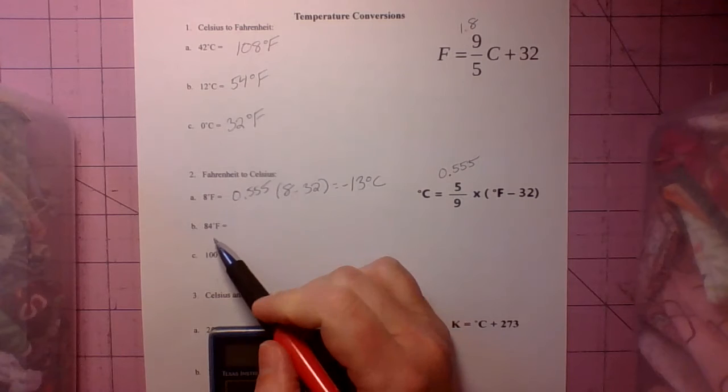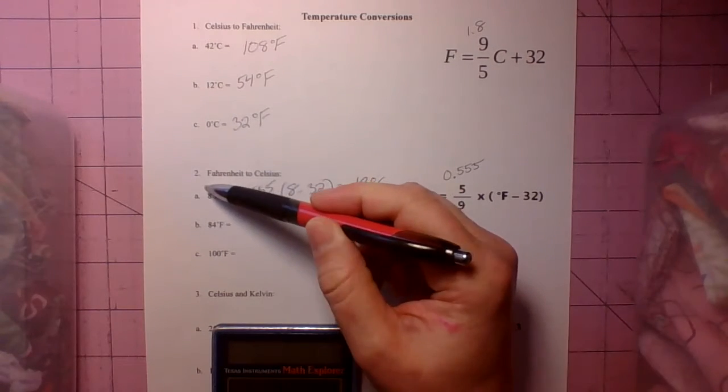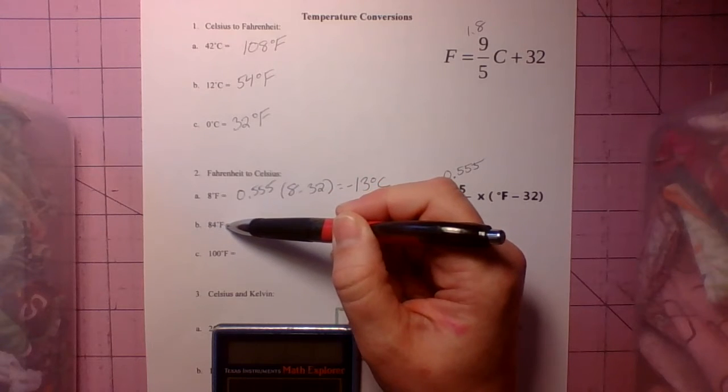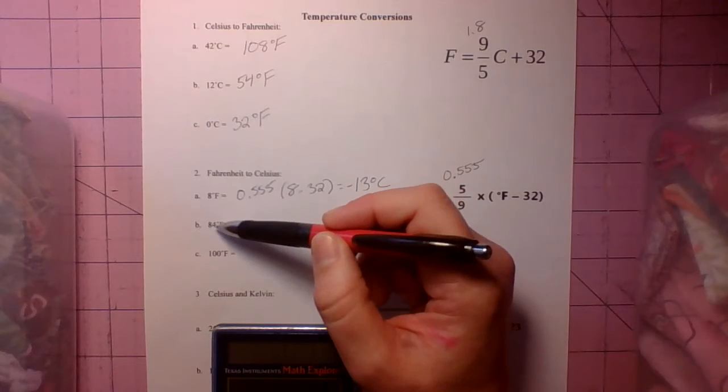So letter B, 84 degrees. So we're more familiar with Fahrenheit degrees. If I say 84 degrees Fahrenheit, that's a nice spring day. It's getting kind of warm there.